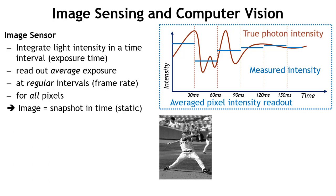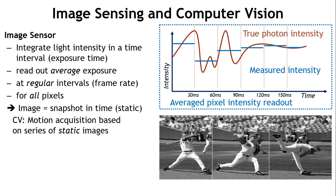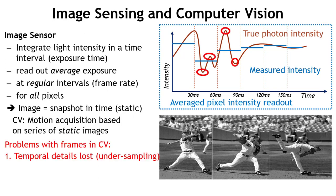In computer vision, you're mostly interested in things that move, things that change — you want to understand your scene and detect what's happening. What people have been doing over the years is taking a series of snapshots and trying to infer motion information from this static data, which is obviously a problem because the averaging done by image sensor pixels causes you to lose all the fine temporal details between frames.